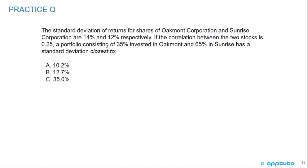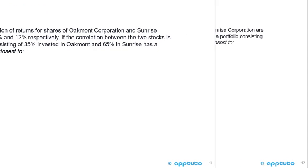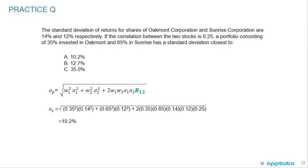Speed is a skill, and skill gets rewarded. Practice calculating portfolio standard deviation as quickly as possible. The standard deviations for Oakmont Corporation and Sunrise Corporation are 14% and 12% respectively. The correlation between the two stocks is 0.25, and a portfolio consists of 35% in Oakmont and 65% in Sunrise. The portfolio standard deviation is closest to A: 10.2%, B: 12.7%, or C: 35%. The correct answer is A, 10.2%. Attention to detail — do not make any keystroke errors. That's the last slide for this LOS.